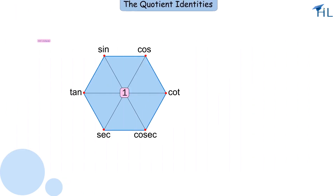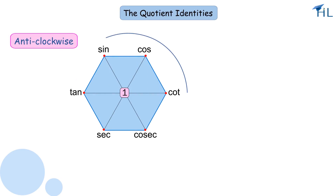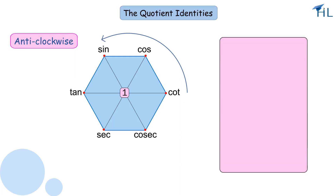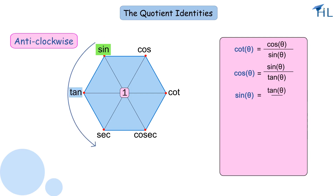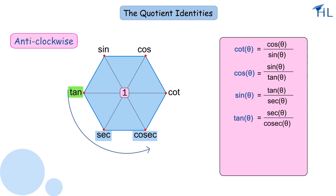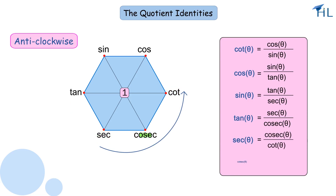Let us now draw an arrow from cot to sin in an anti-clockwise direction. This arrow shows the relationship that cot θ = cos θ / sin θ. Going further in an anti-clockwise direction, we get additional quotient identities: cos θ = sin θ / tan θ.